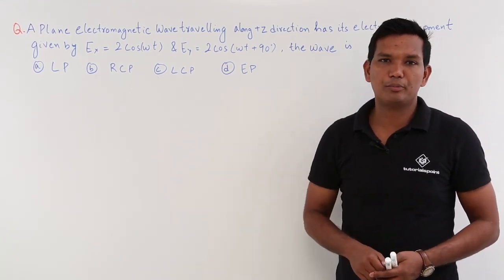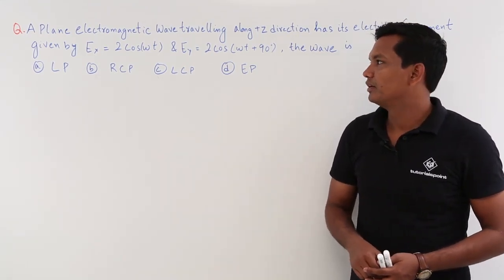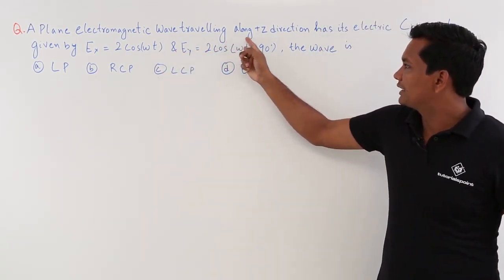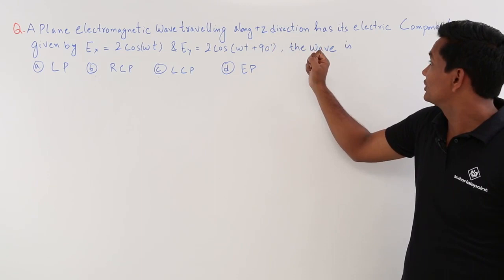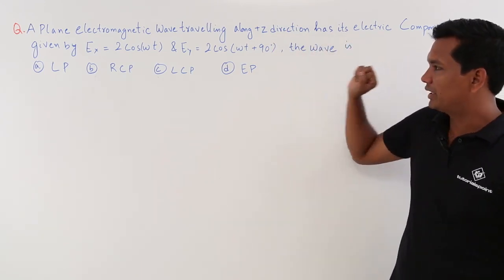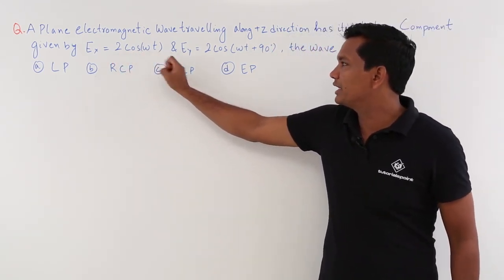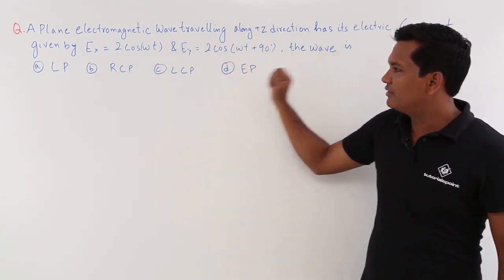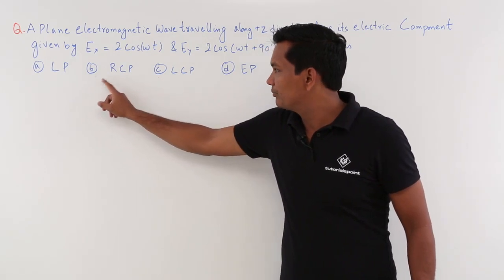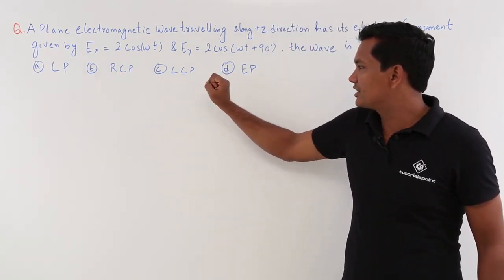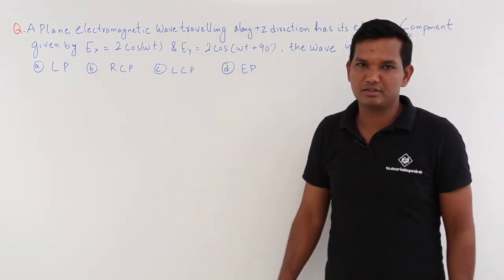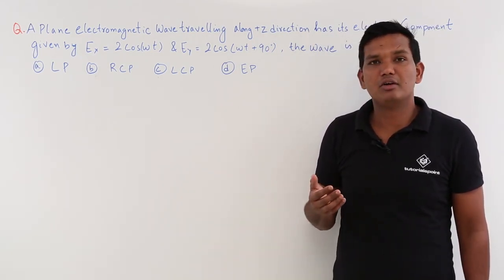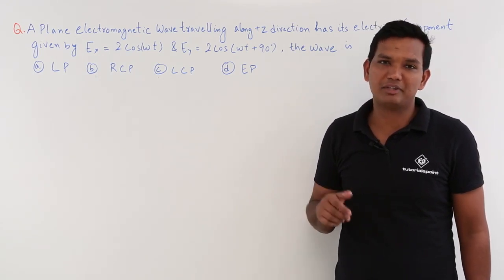In this class, we will solve a problem on polarization. A plane electromagnetic wave traveling along the plus z direction has its electric component given by Ex = 2cos(ωt) and Ey = 2cos(ωt + 90°). We need to determine whether the wave is linearly polarized, right circular polarized, left circular polarized, or elliptically polarized.